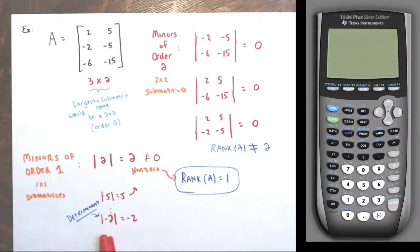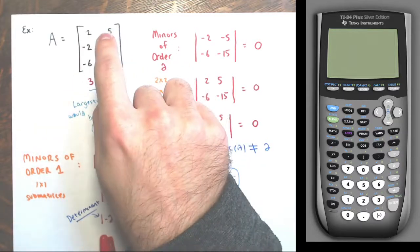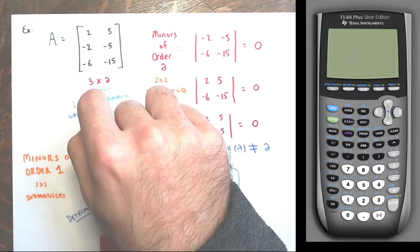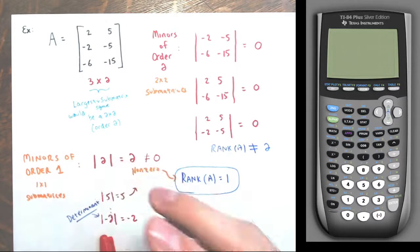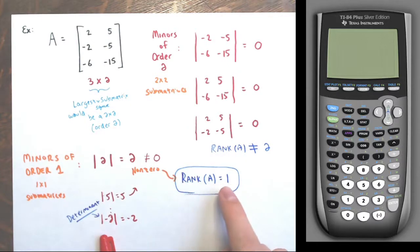As soon as I come across a non-zero minor I can stop and say this matrix has rank one. You could also have put this into reduced echelon form and seen that there was only one pivot column or one pivot row — the rank is one.